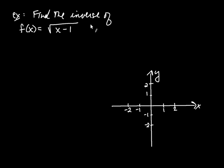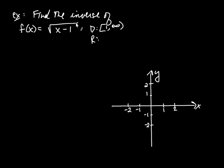First, let's talk about the domain and range of this function. The domain — the set of x's you're allowed to put in — you can't put in an x less than 1, because that would make the square root of a negative, which is a complex number. So the domain is from 1 to infinity. The range: since you're taking the square root, which is always greater than or equal to 0, the range is from 0 to infinity. Those are the x's you can plug in and the corresponding y's.